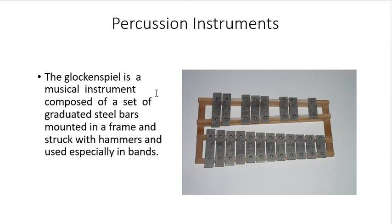Another example of a percussion instrument is the glockenspiel — a musical instrument composed of a set of graduated steel bars mounted in a frame and struck with hammers, used especially in bands. Locally, it is called a lyre, which is commonly used in school bands, especially during high school.